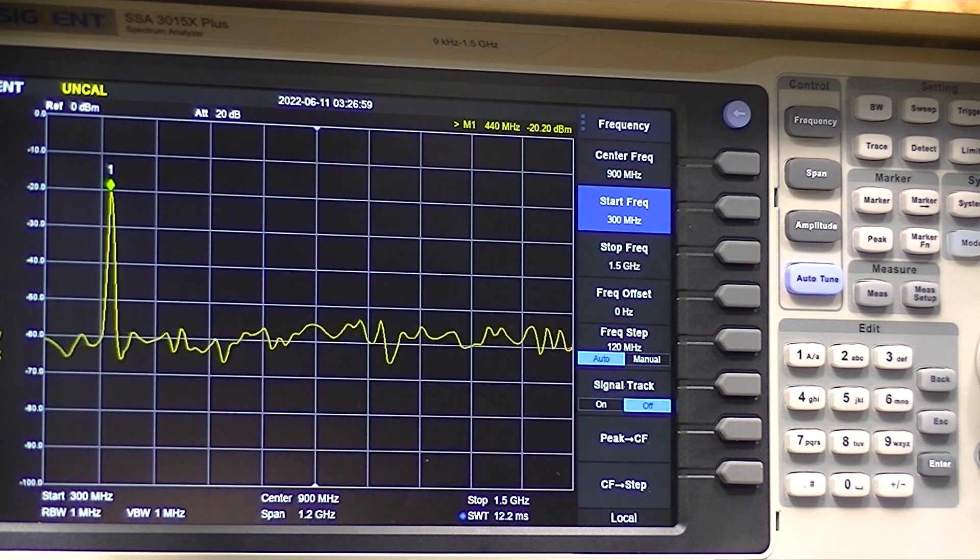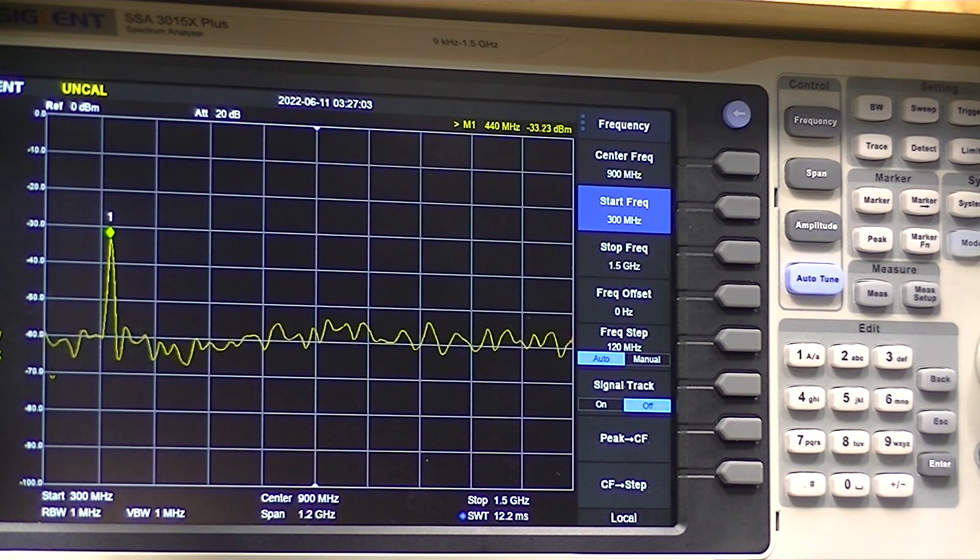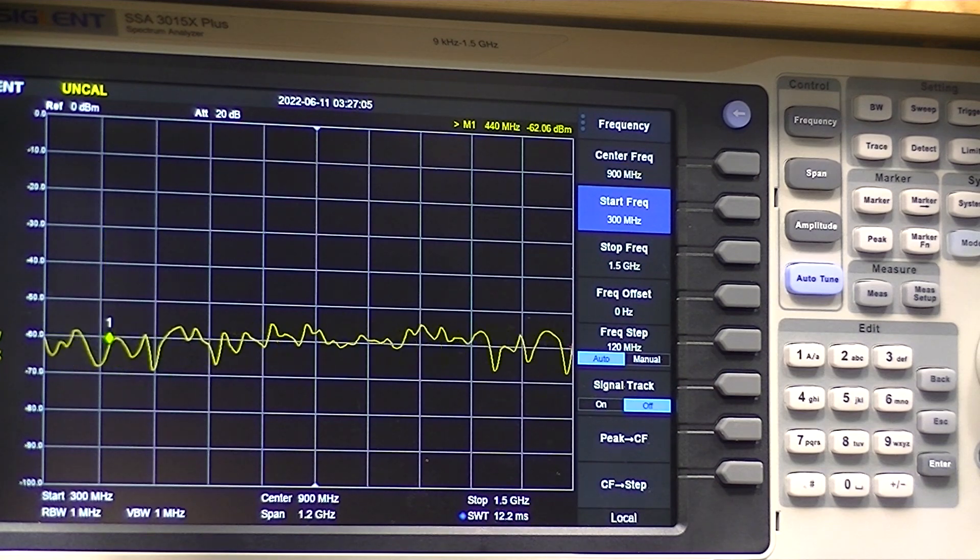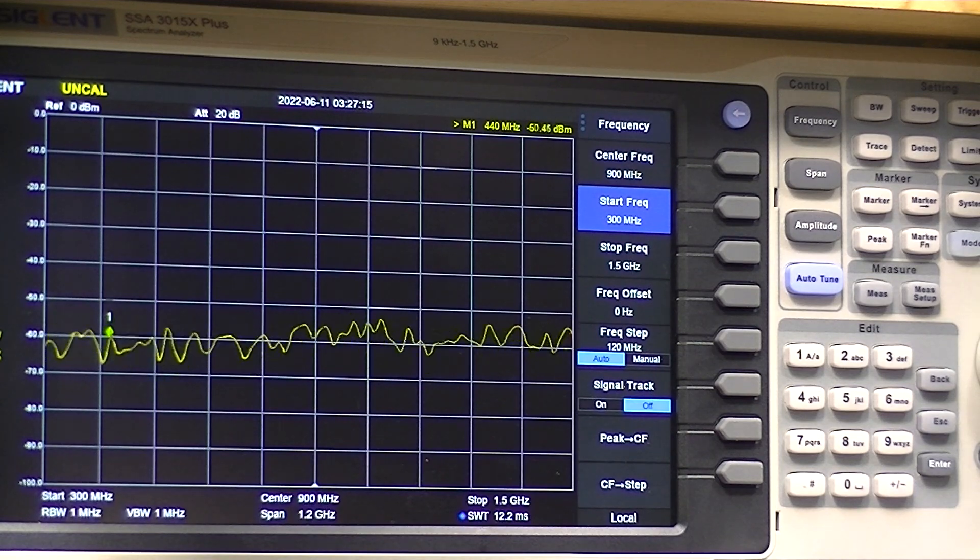Power on, power off. So the delta is 13 dB, so this amplifier is providing 13 dB of gain.